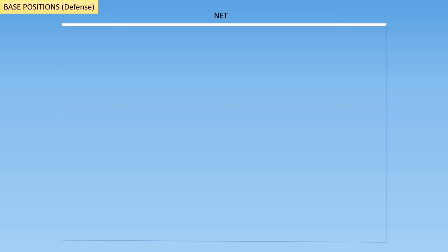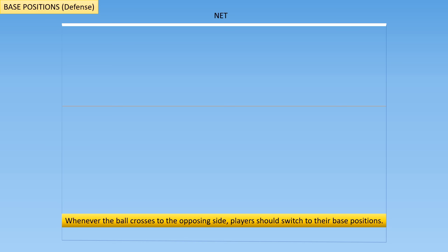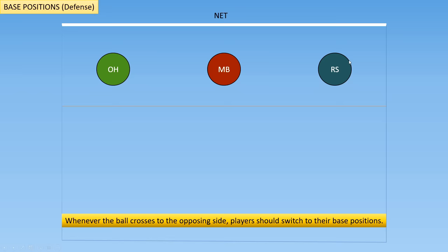The second concept you need to know is the concept of base positions, or defensive positions. This states that whenever the ball crosses to the opposing side, players should switch to their base positions. Typically you'll have the outside hitter come to the front left, the middle blocker come to the middle, the right side hitter on the right, the setter in the back right, libero in the middle back, and the other outside hitter in the back left.